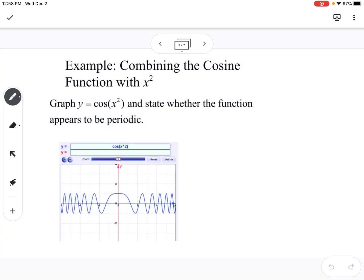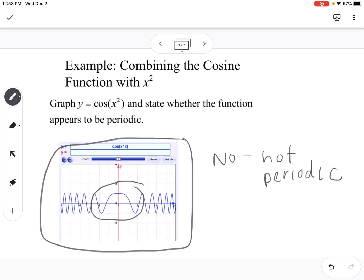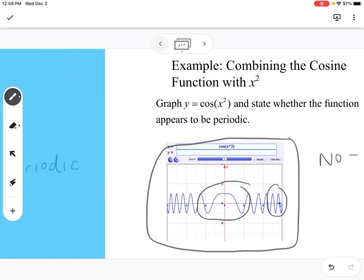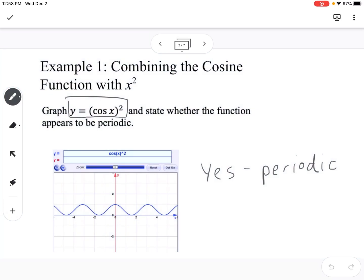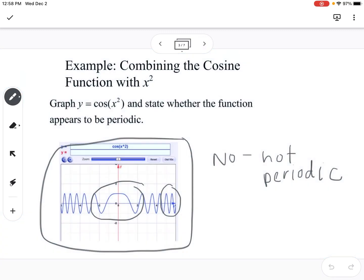Now if we look at y equals cosine of x squared, we can see from the graph down below here that this is not periodic. We can tell that because you can see in the middle it's spaced out, then the waves get closer and closer together. We want something like the previous one where it's continuous. We can say this point to this point is the same distance as this point. That's how we're determining if it's periodic or not.